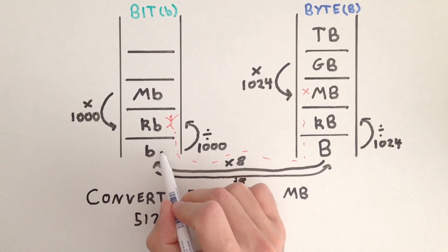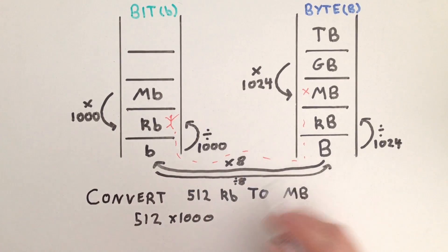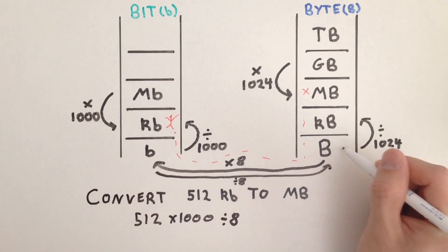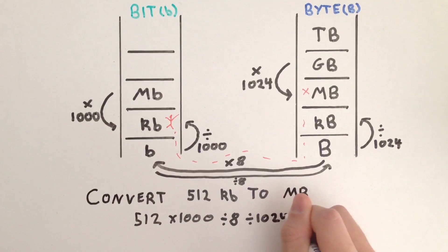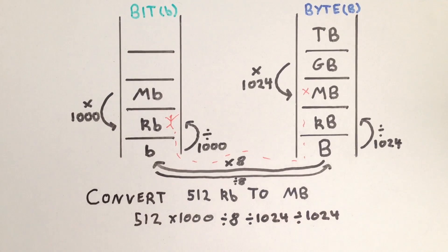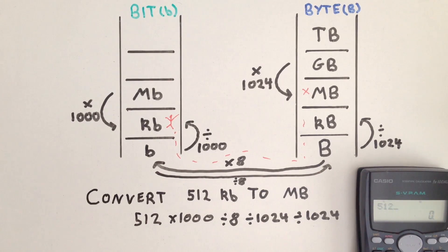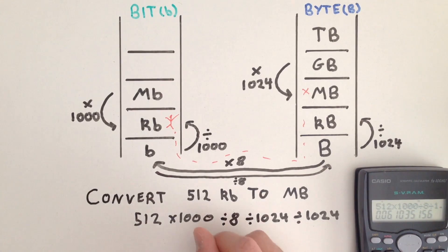So we're now here. We want to cross over to the other ladder, so we divide by eight. Then we go up one level, so we divide by 1024, and then we go up another level, so we divide again by 1024. So if we put that into our calculator: 512 times a thousand, divided by eight, divided by 1024, divided by another 1024. That equals 0.06 megabytes.